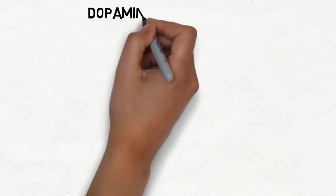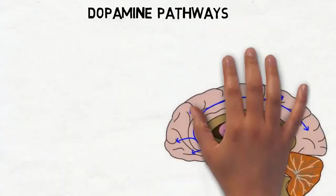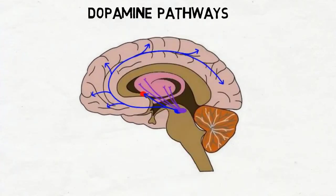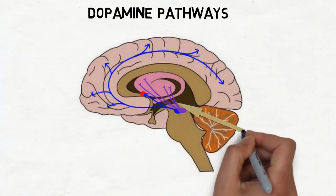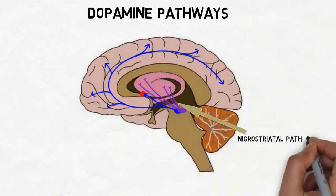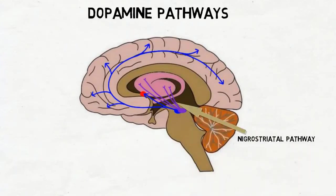There are several major dopamine pathways that carry dopamine from these areas of concentration to other parts of the brain. Some of the largest are the mesostriatal or nigrostriatal pathway, which stretches from the substantia nigra to the striatum.